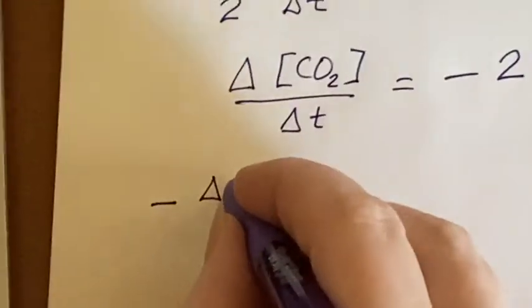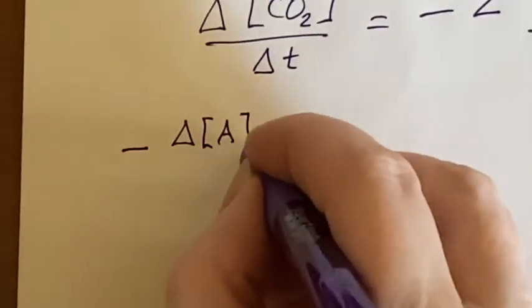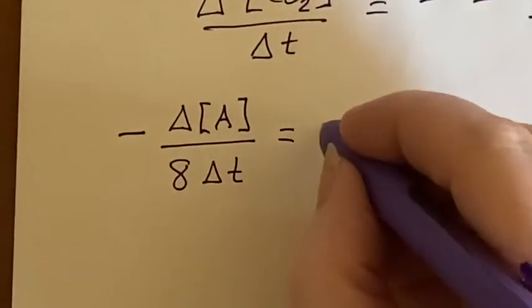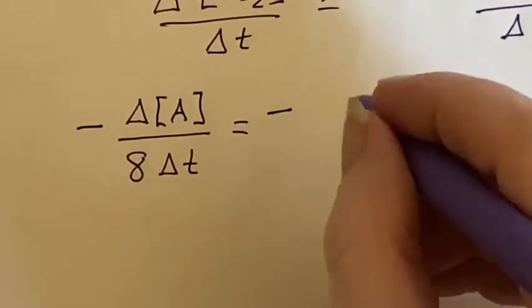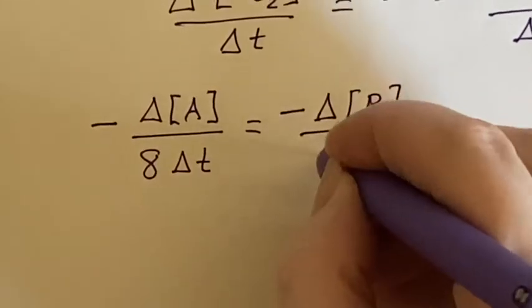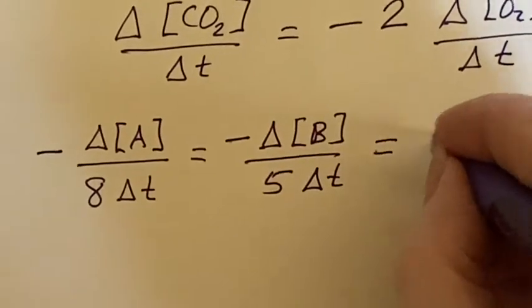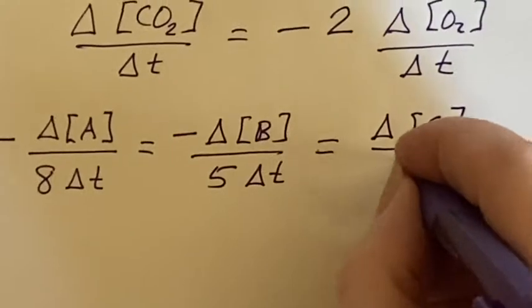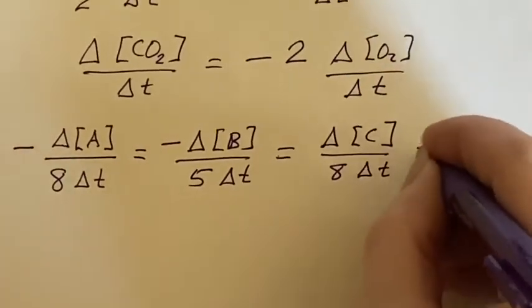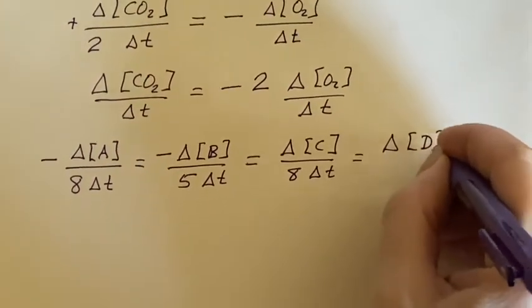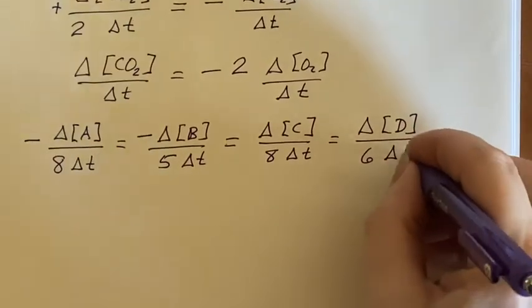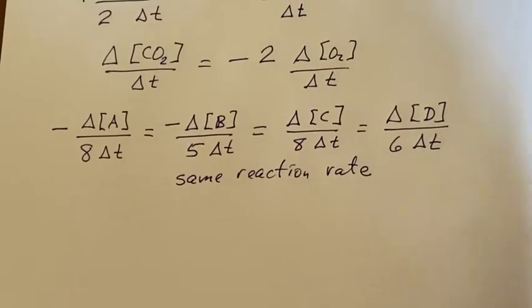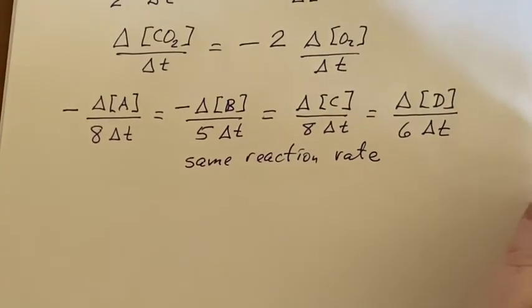It's a reactant. It's disappearing. The A is what is being changed this time. Coefficient was an 8, and here's delta T. And that would give you the same numbers if you did the B disappearing and use its coefficient, which would be the same number as this one's a product. So no negative sign. It'll be positive. 8's the coefficient. And that would be the same as D appearing coefficient of 6. These would all be the same reaction rate. And such a thing, if you could measure only one of them, that's okay because you know what will happen to all of the others.